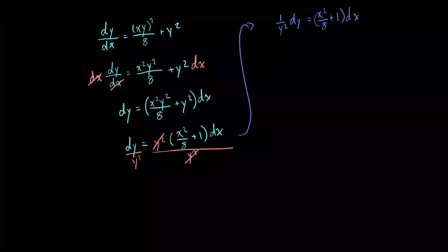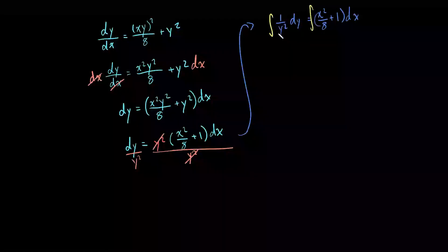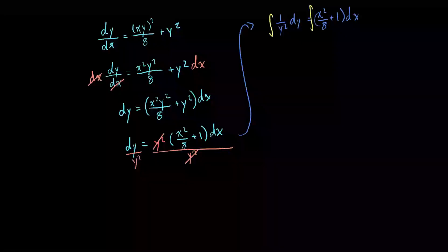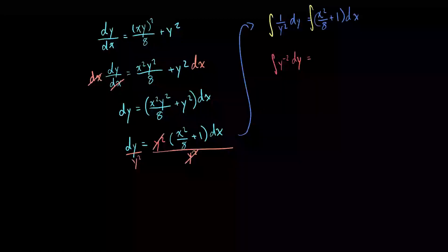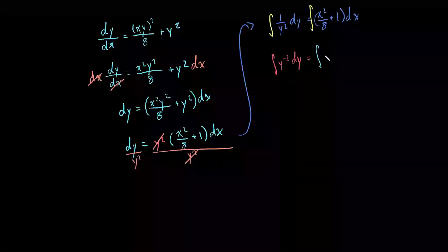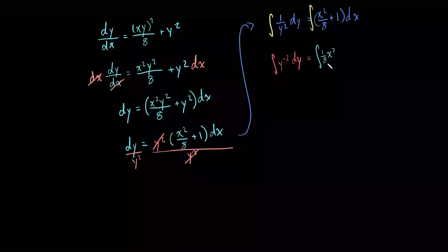So now what we can do is integrate both sides. For the left-hand side, since we have 1 over y squared, we can rewrite that as y to the negative 2 times dy. For the right-hand side, we can separate this into two separate integrals: 1 over 8 times x squared dx, plus the integral of dx.